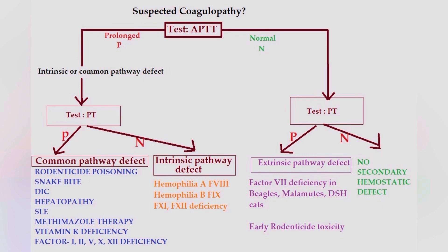If the PT is normal, it means there is an intrinsic pathway defect — either hemophilia A or hemophilia B. If the APTT is normal and we test PT and it is prolonged, we identify that the pathway defect is with the extrinsic pathway. One common cause is early rodenticide toxicity; also factor 7 deficiency in beagles, Alaskan malamutes, and DSH domestic short-hair cats. If the PT is also normal, we identify that there is no secondary hemostatic defect.